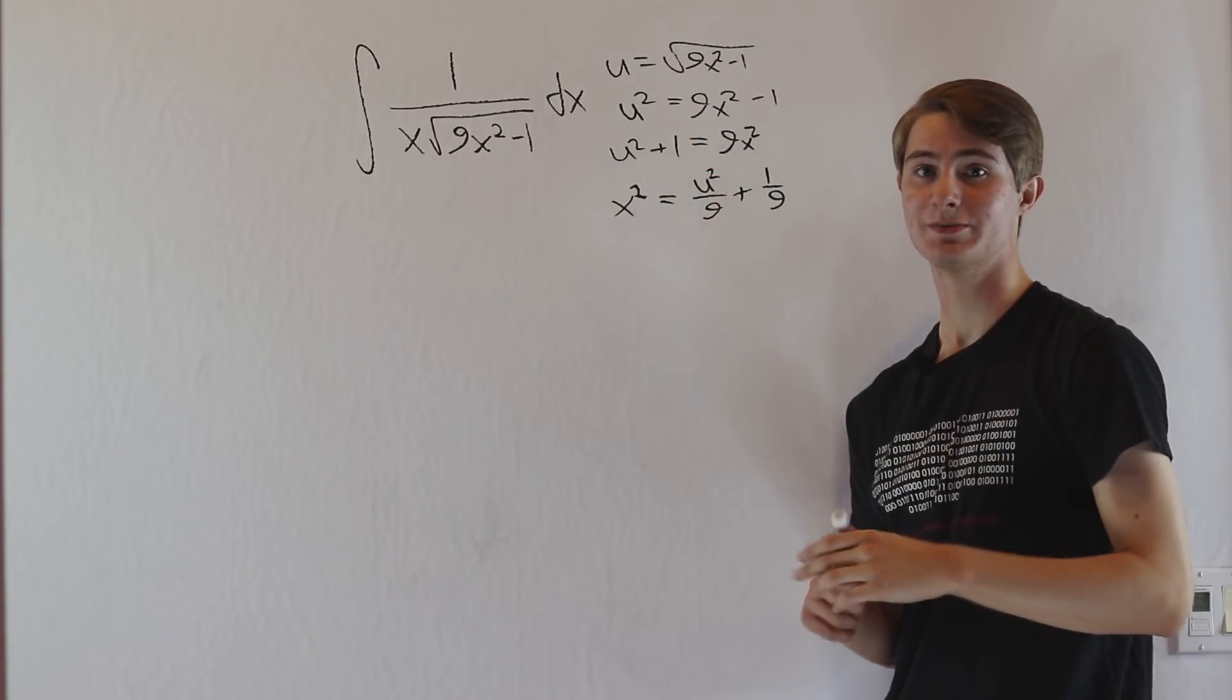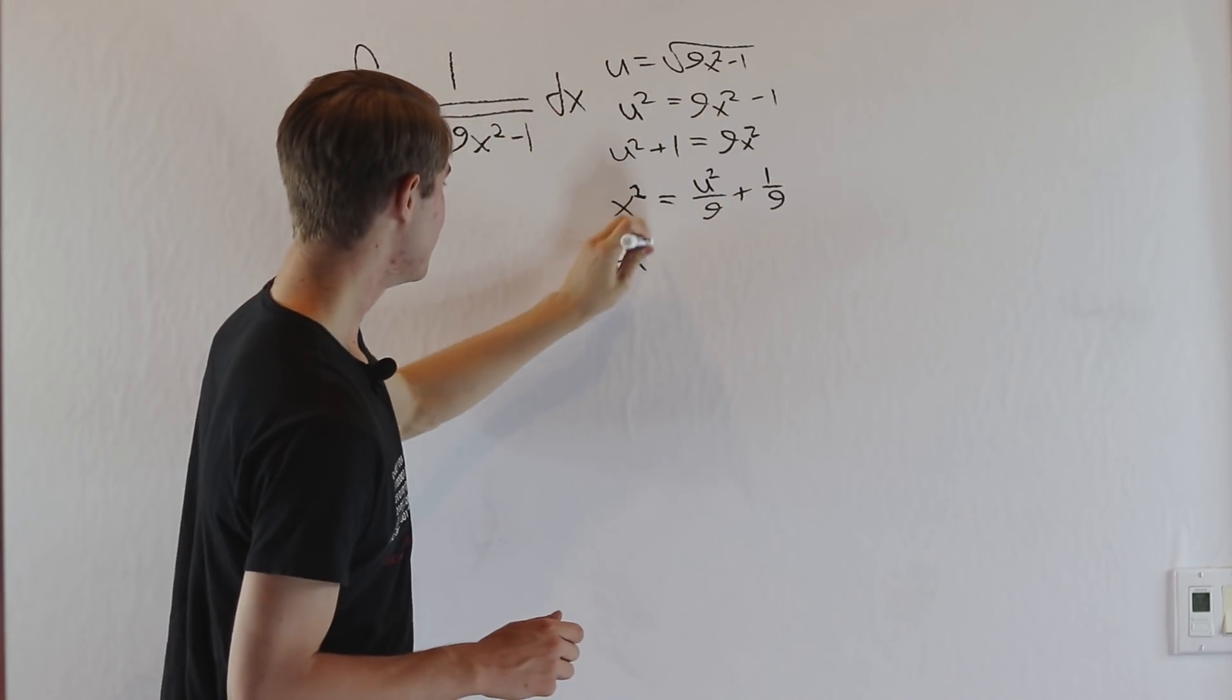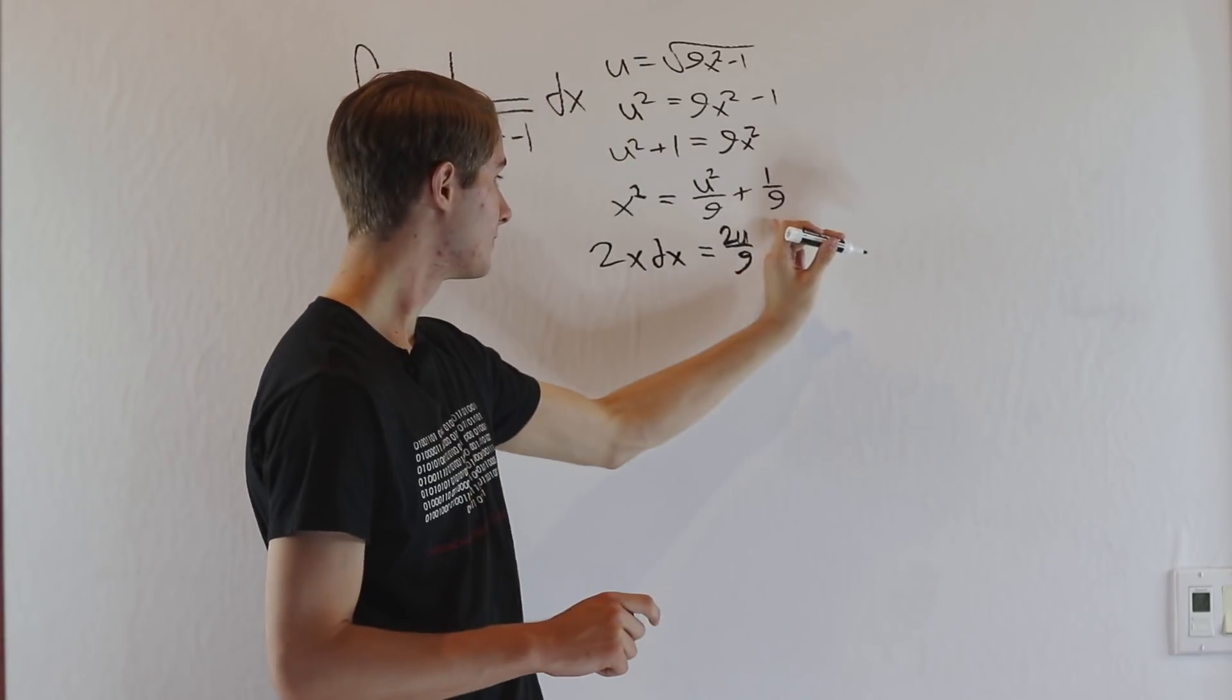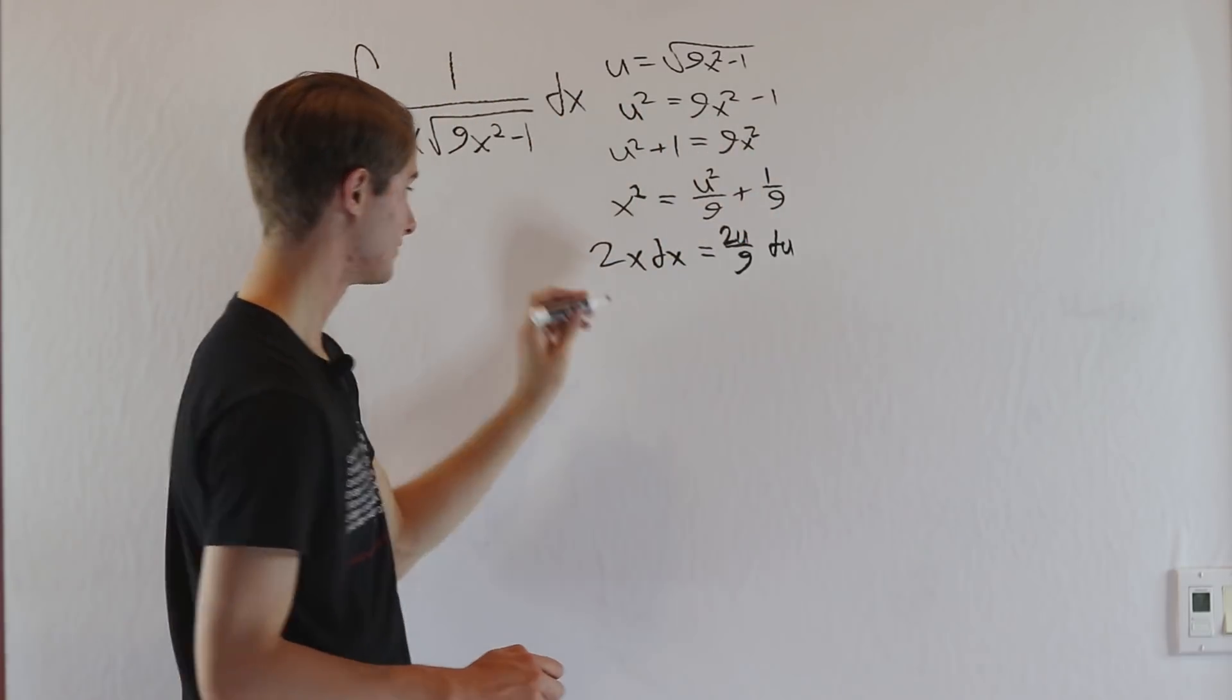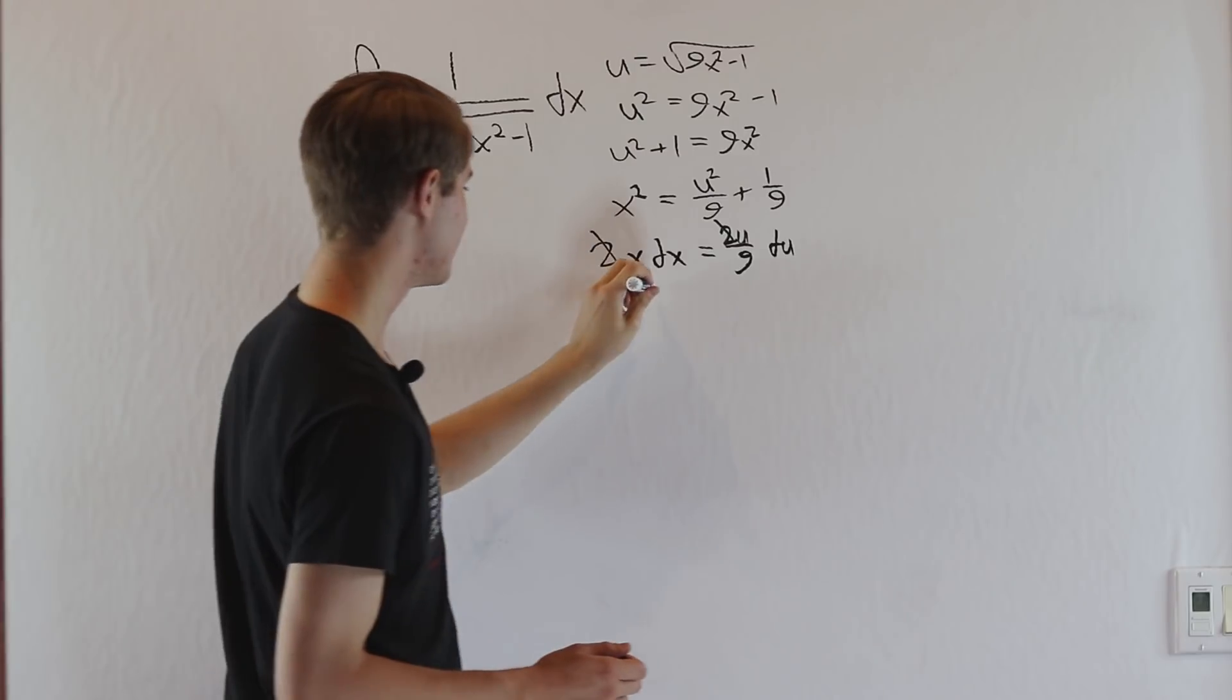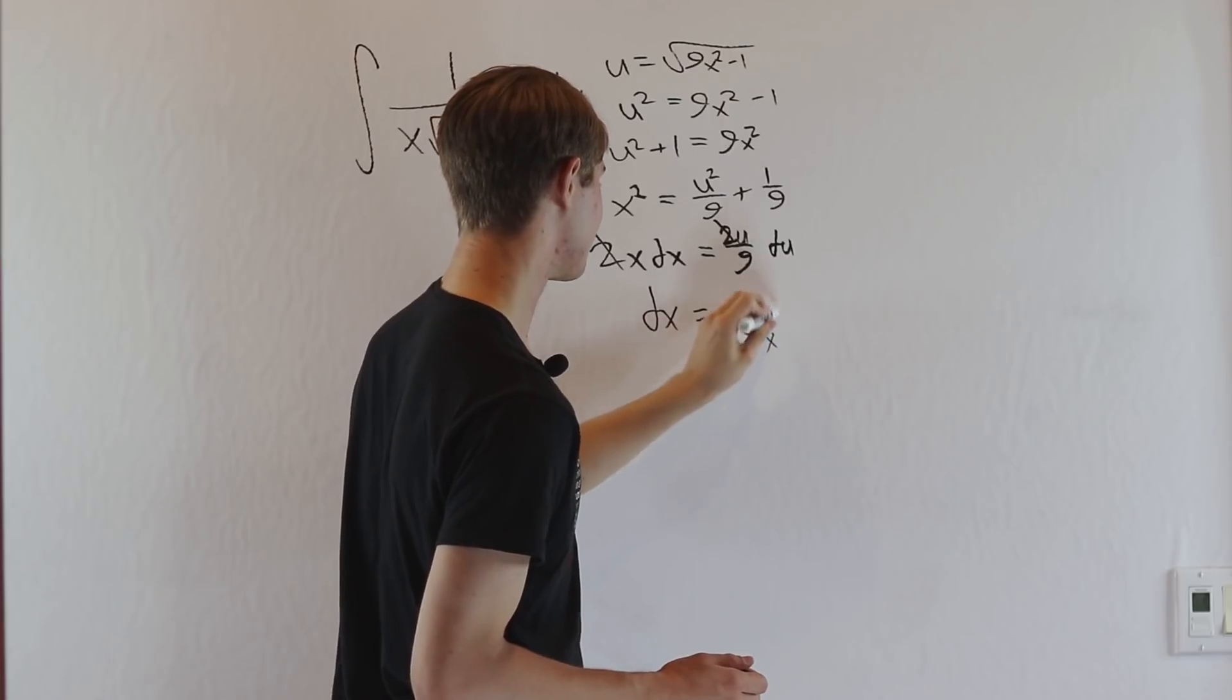And now we can find dx by differentiating both sides. So what we get is 2x dx equals, and then we get 2u over 9 by the power rule right here, and then 1 over 9 is a constant, so that goes away, and we just get du. Now we have a 2 on both sides, so we can cancel that nicely. And in order to isolate dx, we can just divide by x. So we get that dx equals u over 9x du.